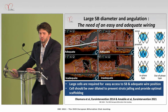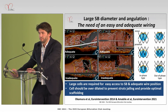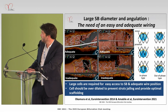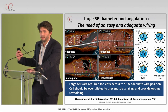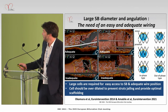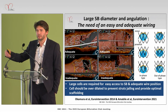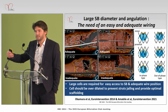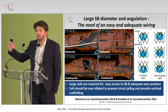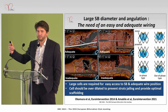Finally, another concern when performing PCI on the left main is the size of the cell, because it will influence our ability to adequately wire the side branch — meaning being able to put a wire into a cell connecting to the carina. Also, because the side branch is quite large — whether it's the circumflex or LAD — you need to really overexpand the cell to a large diameter in order to get the optimal scaffolding.